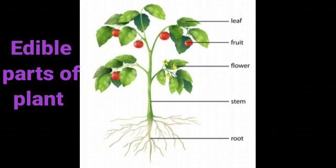The edible parts of a plant include: leaf — for example, leafy vegetables; fruits — we can eat fruits of course; flowers — for example, cauliflower; stems — for example, asparagus; and roots — we eat potatoes and sweet potatoes, which are roots of a plant.